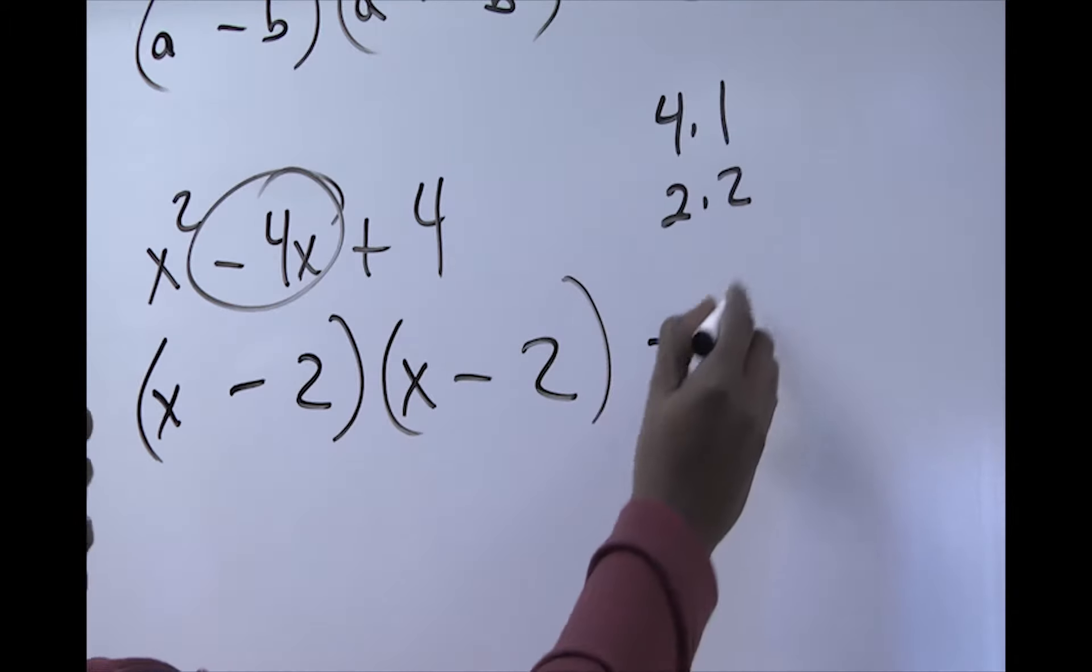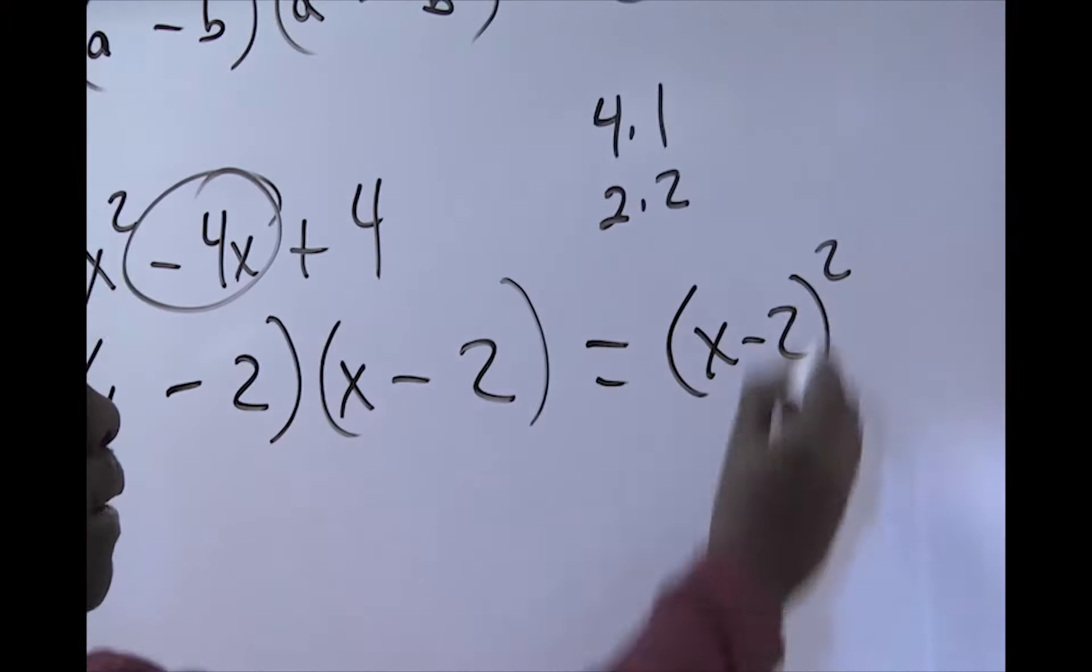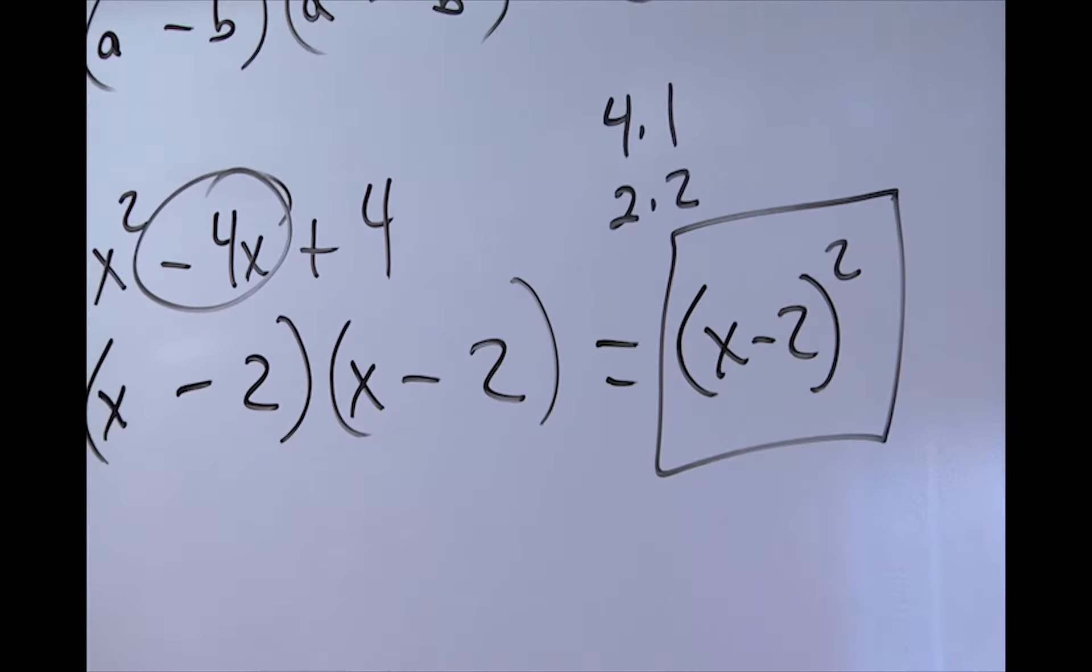So, we will want to write this thing as (x - 2)² raised to the second power. So, this is what we will have in this situation.